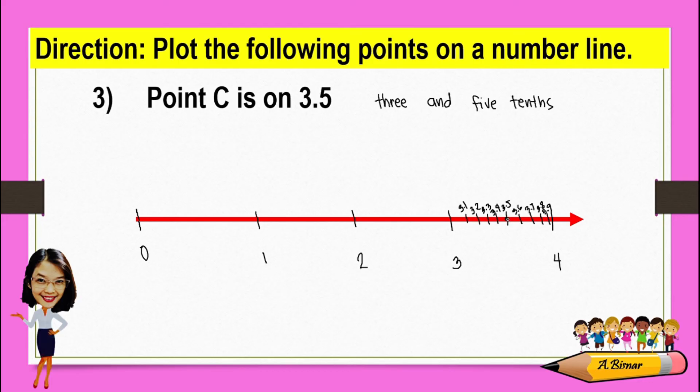From here, we can clearly see where point C is. That's on 3.5, which means point C is between 3 and 4.